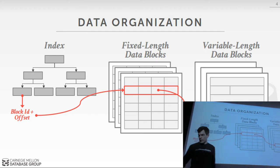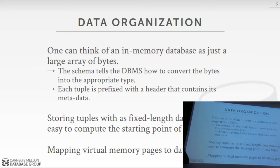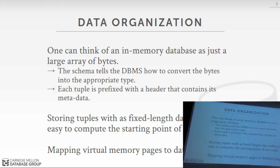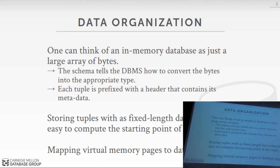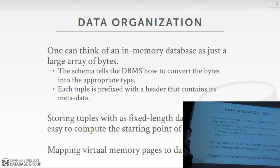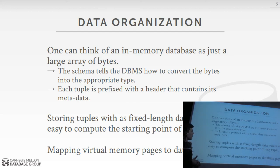Today we're going to talk about how we actually want to represent these two things. The way to think about an in-memory database is that it's essentially just a large byte buffer — a large byte array. We write code in our database system that can allow us to interpret those bytes to represent the values of our tuples. You jump to some offset and then look in your schema in the catalog, and it tells you how to convert those bytes into the type you expect.